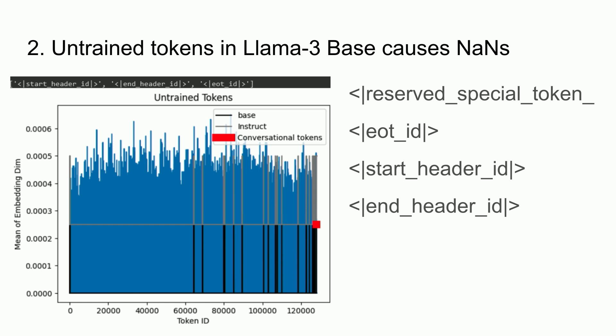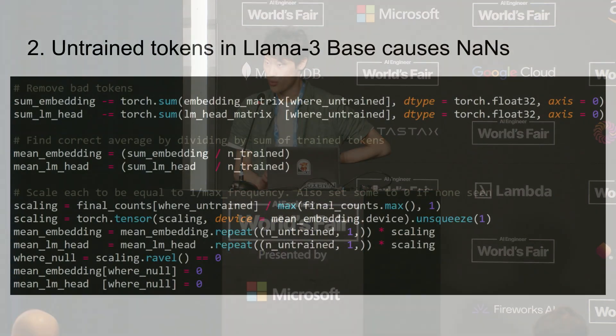The second issue: you must not use the Llama 3 base model if you're using the Llama 3 instruct chat template. There are untrained tokens in Llama 3 base — the instruct version has these trained. Using the base model will cause NANs in your gradients. These untrained tokens include the reserved special tokens 0 to 250, the end-of-turn token, the start header, and the end header. Some of these embeddings are literally zero, intentionally set that way. In Unsloth, we fix this automatically.